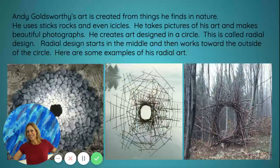Andy Goldsworthy's art is created from things he finds in nature. He uses sticks, rocks, and even icicles. He takes pictures of his art and makes beautiful photographs. He creates art designed in a circle — this is called radial design. Radial design starts in the middle and works toward the outside of the circle. Here are some examples of his radial art.